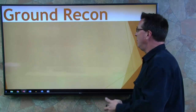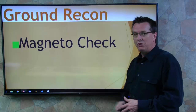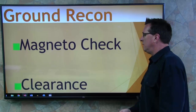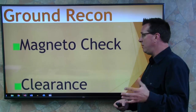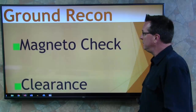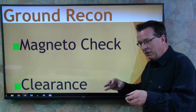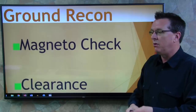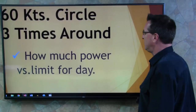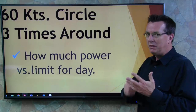Then you're going to have ground recon. Once you're down in the hole, you may need to do a magneto check depending on what you're flying. If you're in a piston-powered aircraft you may want to do a magneto check; if you're in a turbine aircraft, no magnetos involved. And then of course clearance — clearance for your tail rotor, your main rotor. What clearance do you have, and what obstacles do you have to go up and over? You may want to go to the rear of your open area, get a little running start, get airspeed, and pop out of the hole. Also think about how much power you have versus your limit for the day.